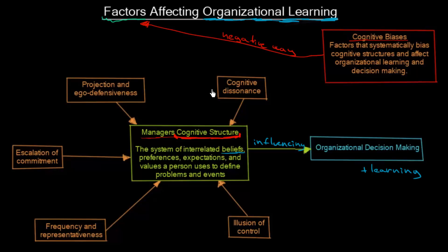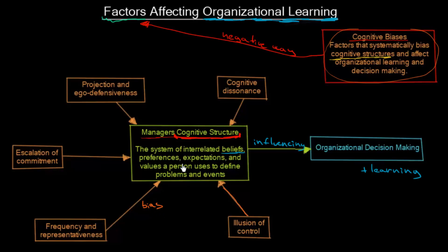Now let's look at the other term, which is perhaps more important: cognitive biases. These are factors that systematically bias the cognitive structures we just talked about, and they affect organizational learning and decision making. These cognitive biases, as you can see listed here, are the factors affecting organizational learning. We currently have five of them, and they are biasing the manager's cognitive structure in a negative way, which in turn influences decision making, learning, and of course organizational change itself.